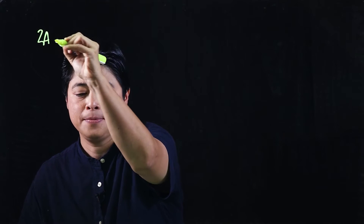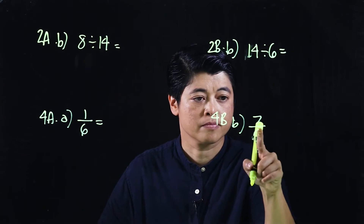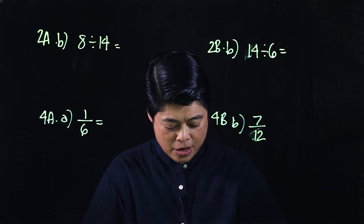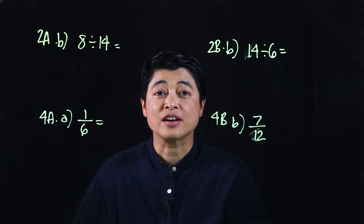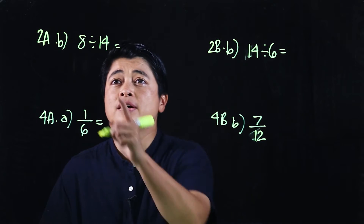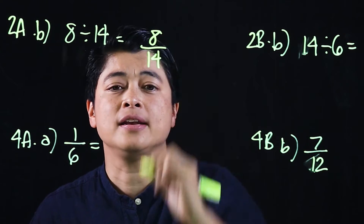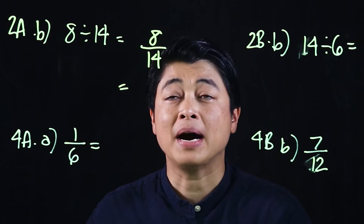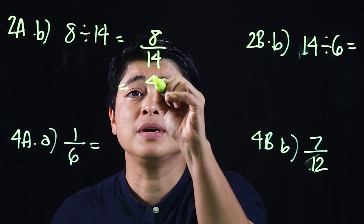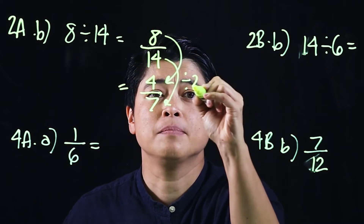Starting with page 57, the instruction says: divide and express the fraction in simplest form. Looking at the first problem, this is 8 over 14. Both can be divided by 2, so when we divide by 2 this will be 4 over 7.